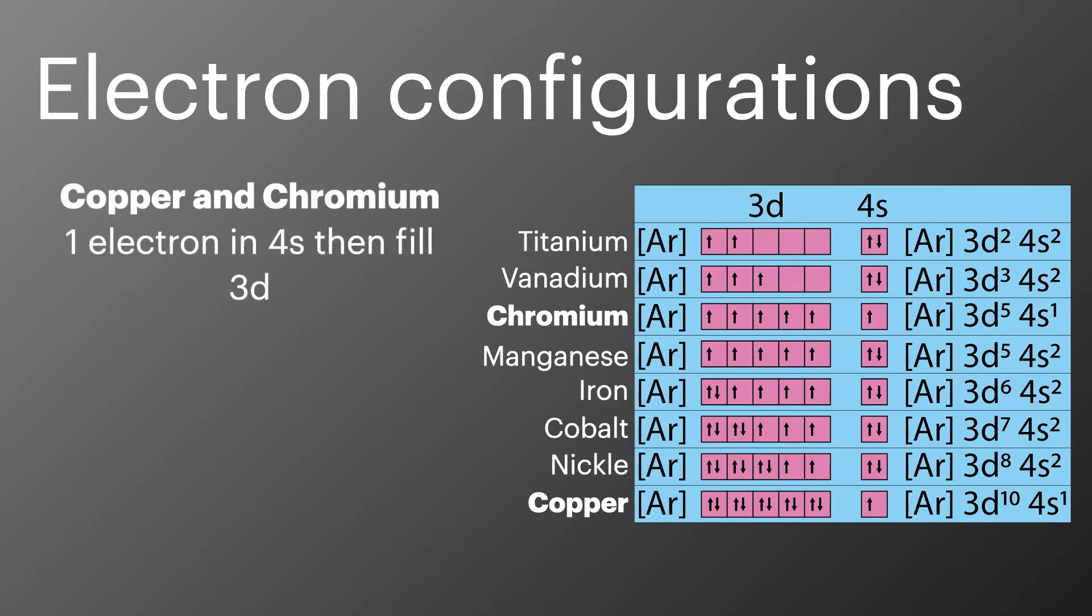However, there are two exceptions to this rule and you'll have come across these in your first year studies when you looked at electron configurations. Both chromium and copper place one electron in the 4s subshell before going on to fill the 3d subshell.